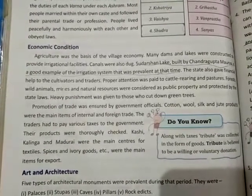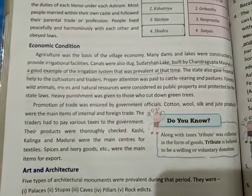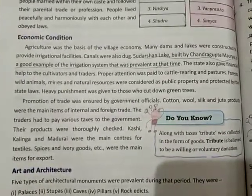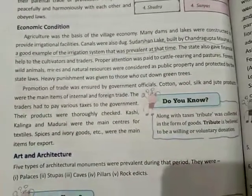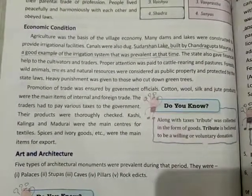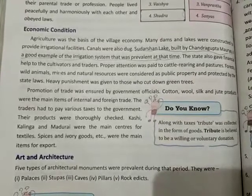Sudarshan Lake, built by Chandragupta Maurya, is a good example of the irrigation system prevalent at that time. Canals were also there. The state also gave financial help to cultivators and traders. Proper attention was paid to cattle rearing and pastures, and everything was quite systematic.